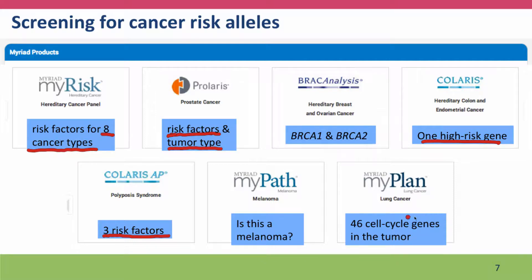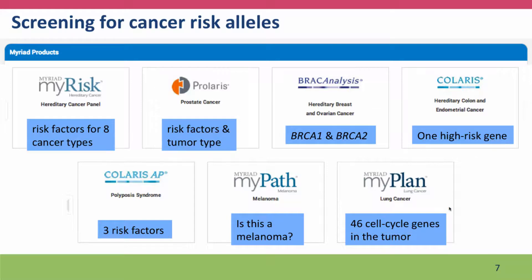Finally, their lung cancer panel characterizes lung cancer tumors. They look at 46 genes, all of which affect aspects of the cell cycle, and use these as indicators to modify treatment appropriately for the genotypes. This has the same concerns raised on the previous slide about tumor genetic variability.